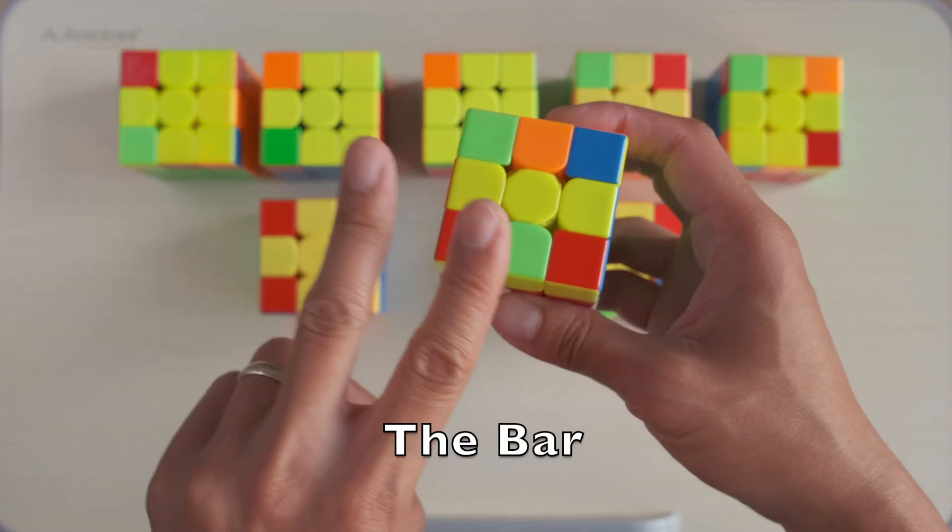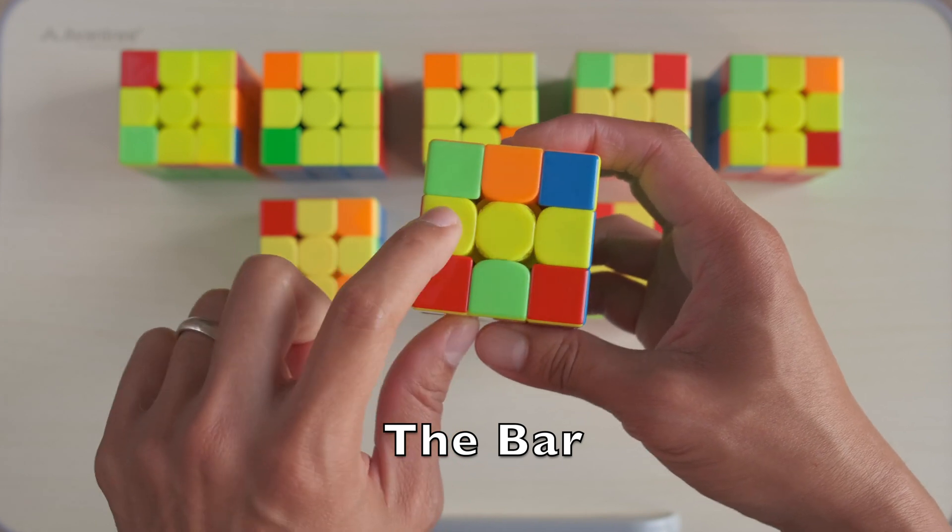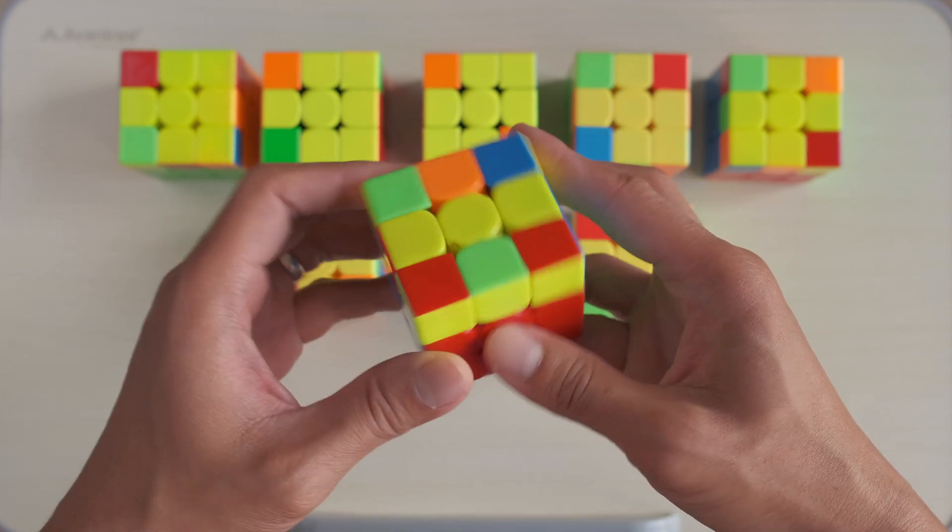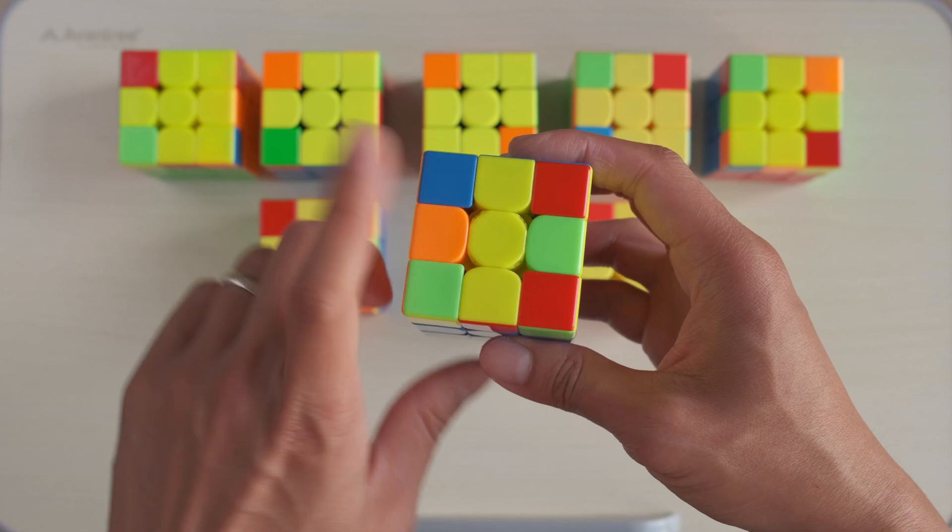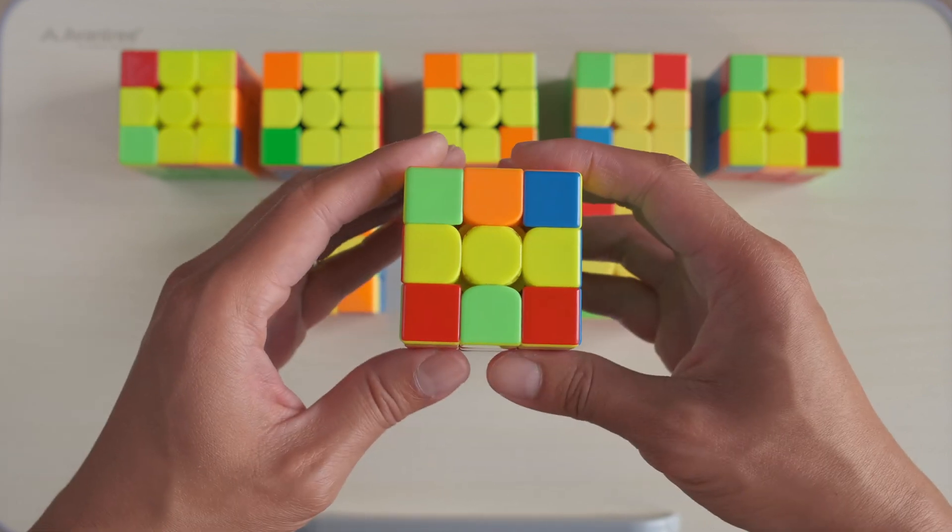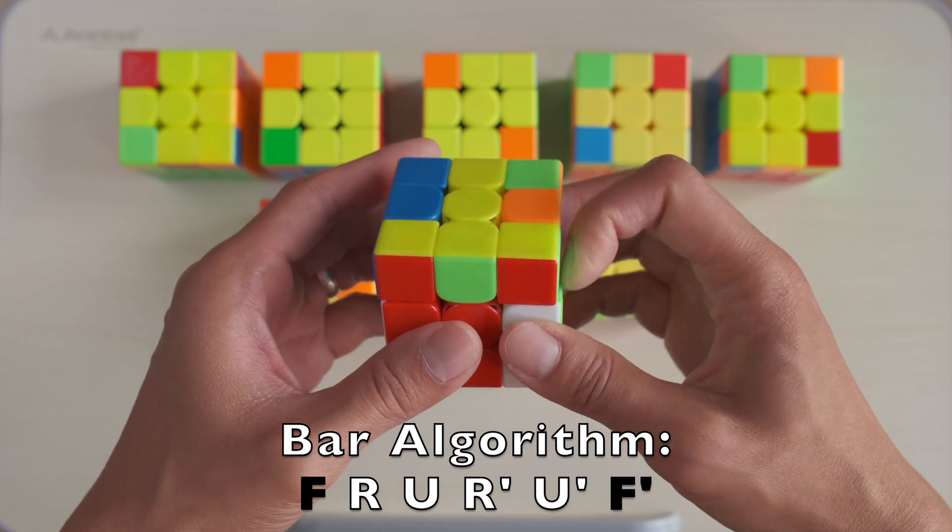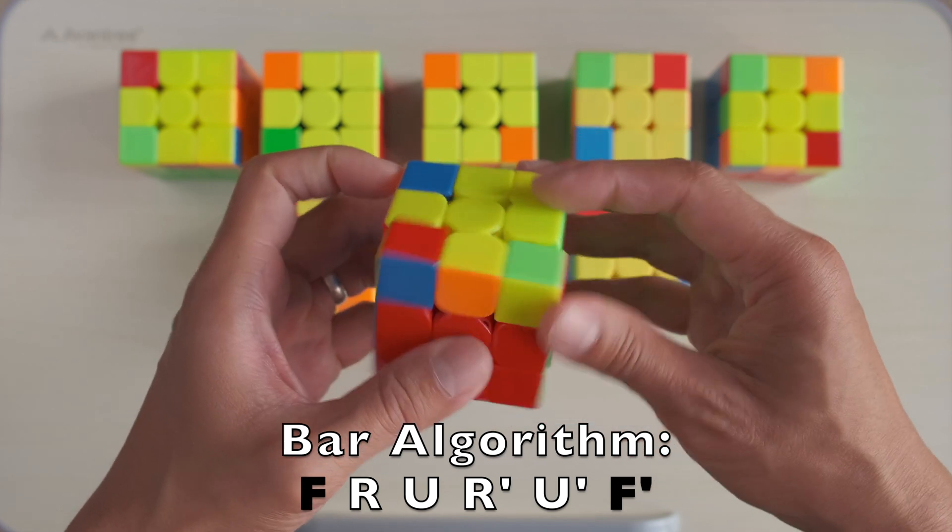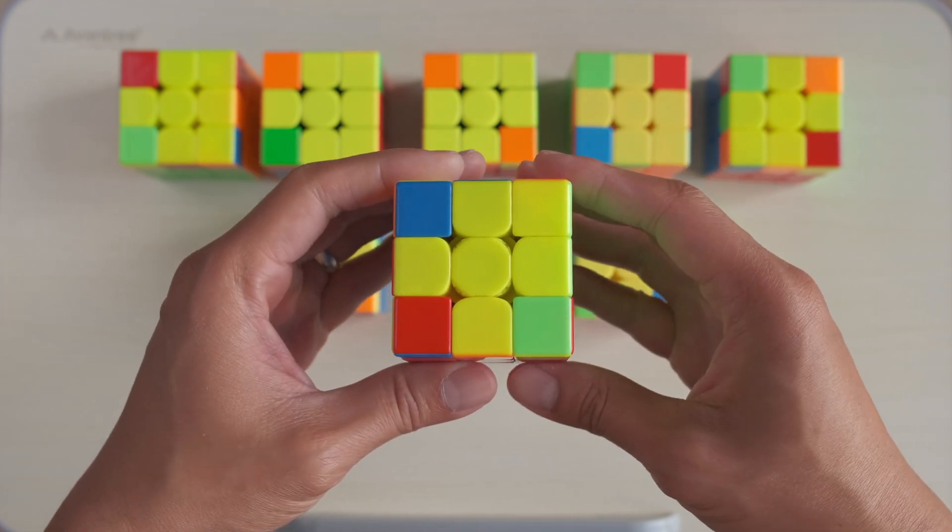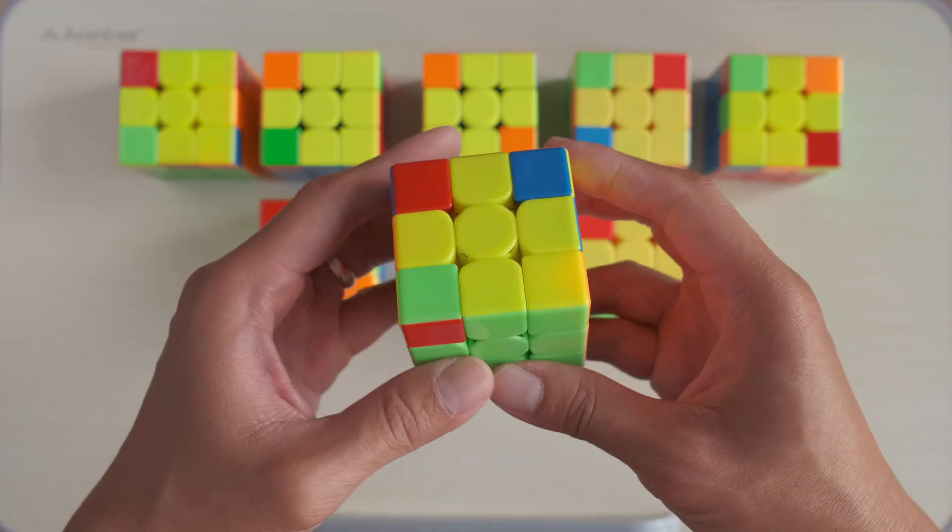Here we have the bar with only 2 edge pieces. In order to do the algorithm, we need to make sure the bar is horizontal. Like this: F, R, U, R', U', F'. Now here we see we have one of the patterns of the cross.